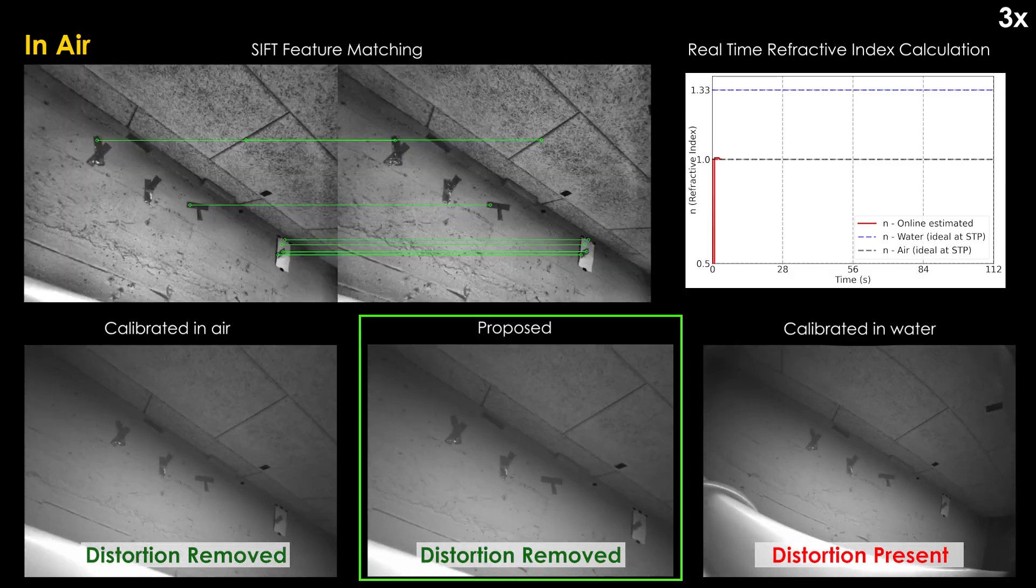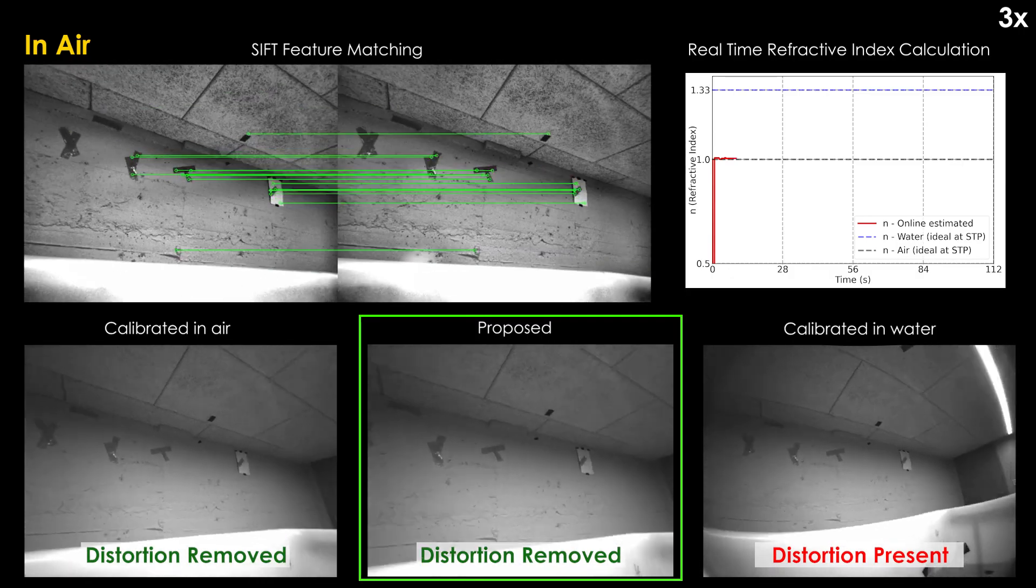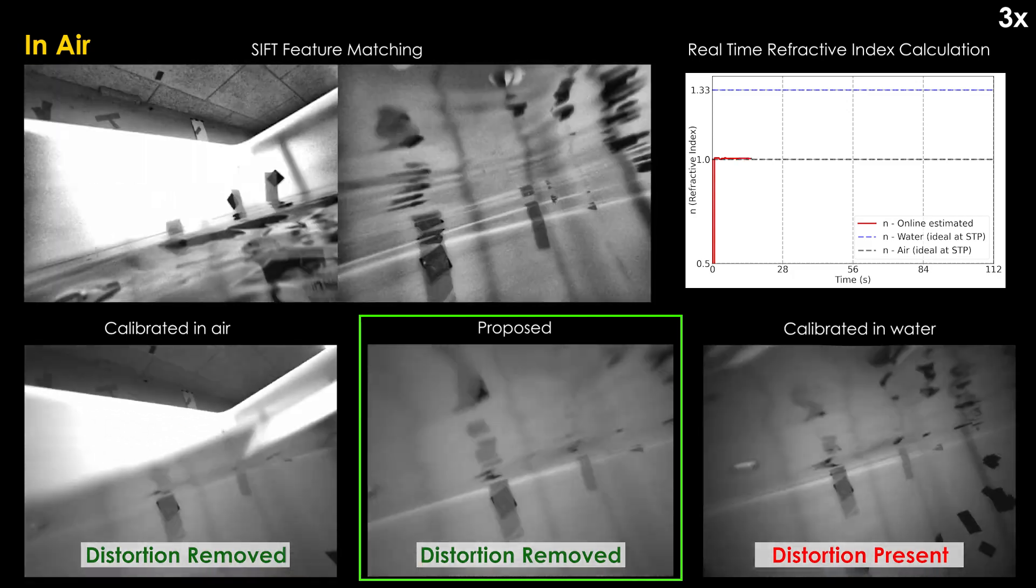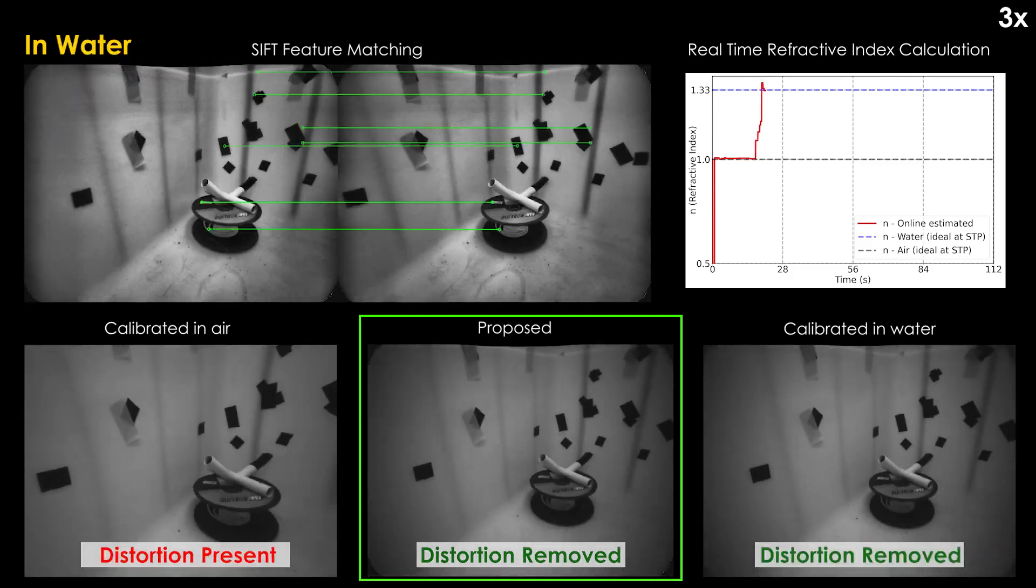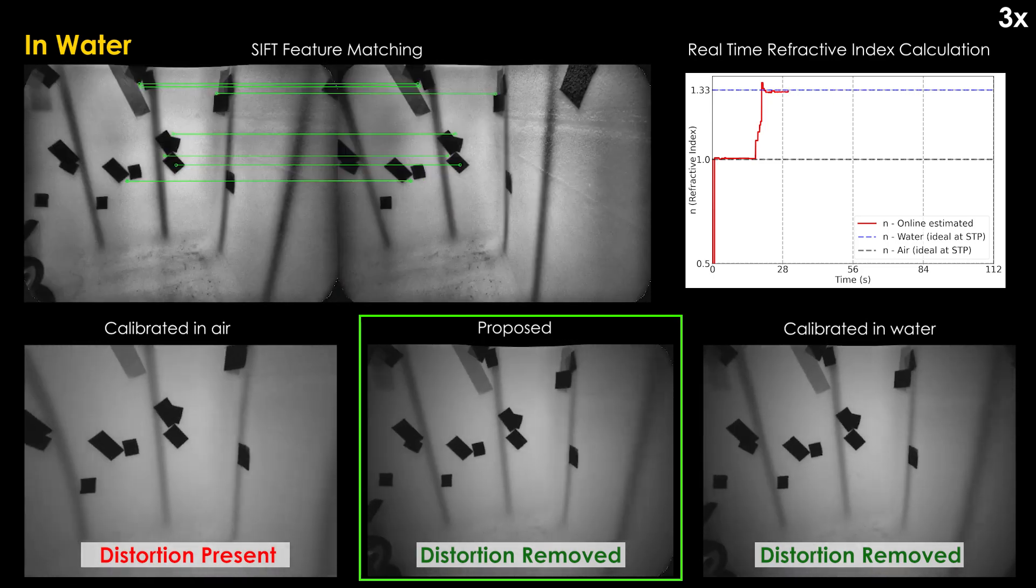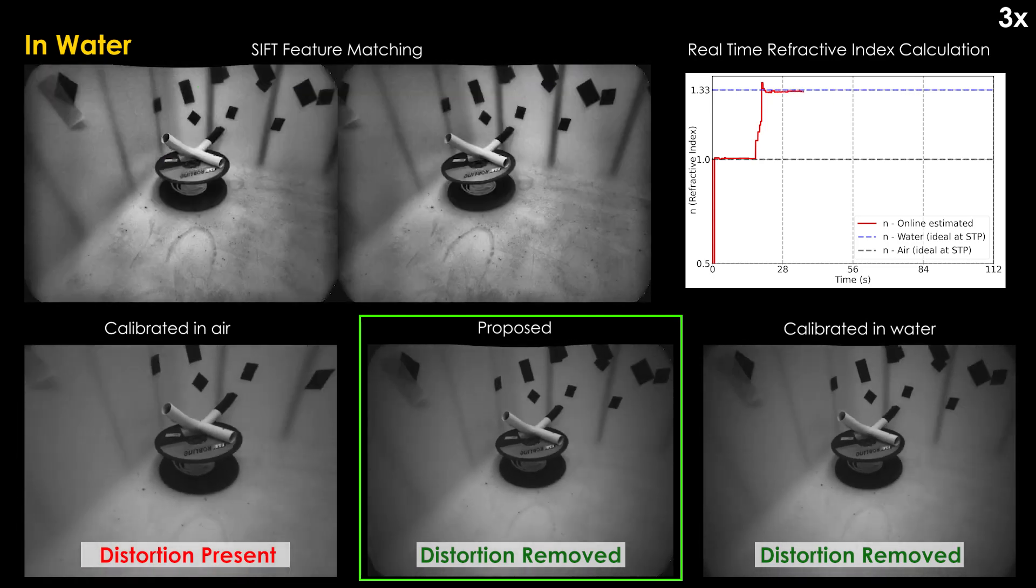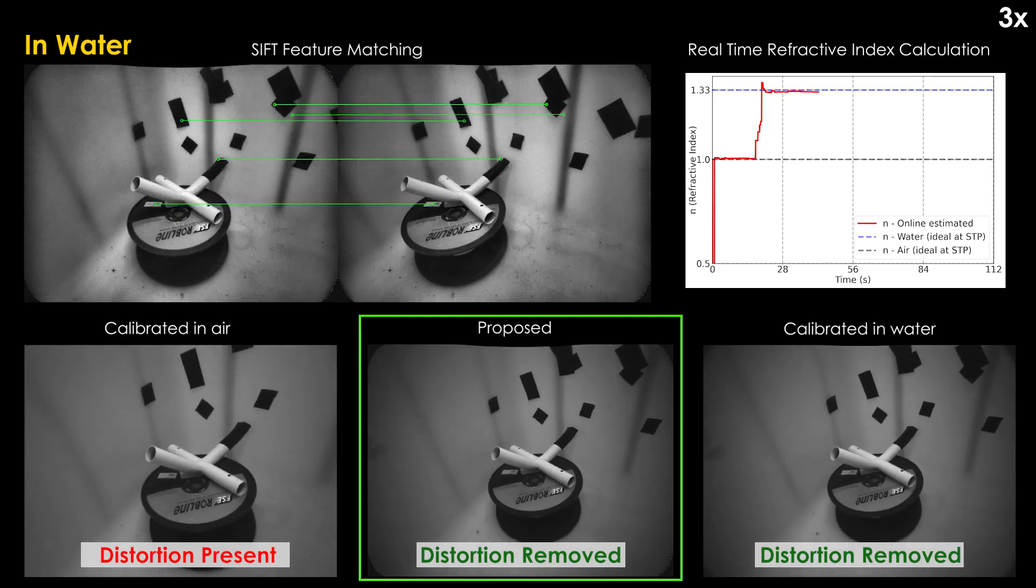We also present the adaptive nature of the proposed method in the scenarios of drastic transition between refractive media. This is evaluated by periodically transitioning the camera system between air and water and comparing the estimated refractive index with the known ideal values for refractive indices of air and water.